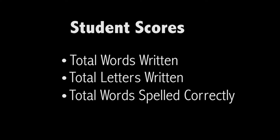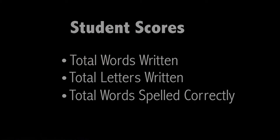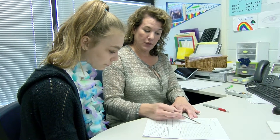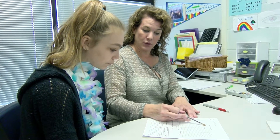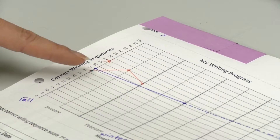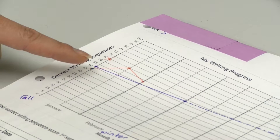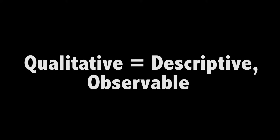Students also receive scores for total words written, total letters written within the words, and total words spelled correctly. Students and teachers can graph any of the reported scores, but the correct writing sequence offers the best summary of current writing performance.